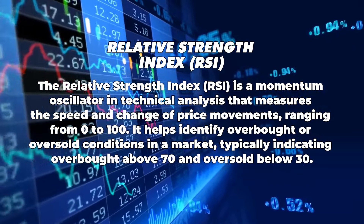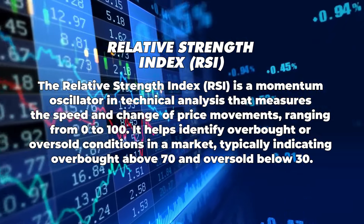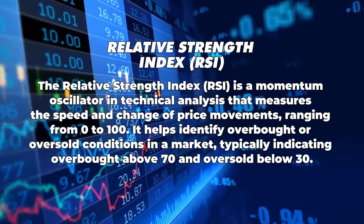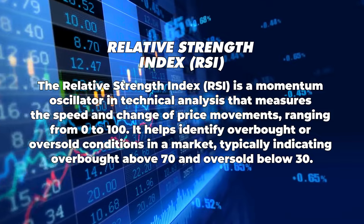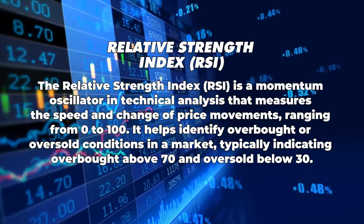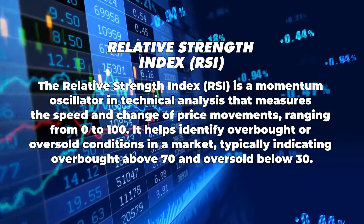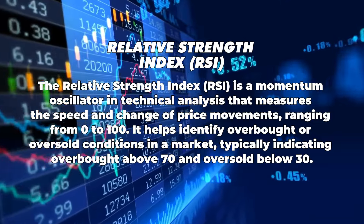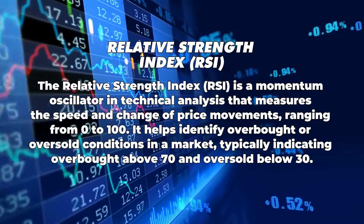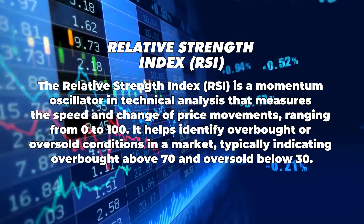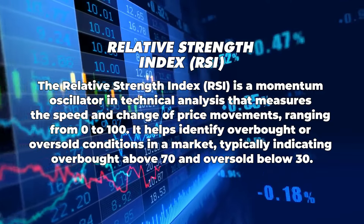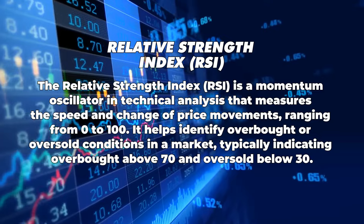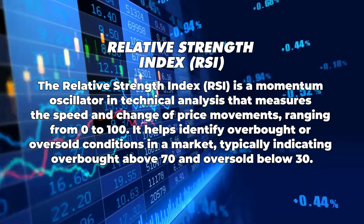The RSI oscillates between 0 to 100, and it helps traders identify the market sentiment and potential upcoming price movements. An RSI reading above 70 suggests that the asset is overbought, indicating a potential price reversal or a pullback. In this state, the likelihood of a pullback increases. On the flip side, if the RSI is below 30, we would consider that to be an oversold sentiment on the asset.